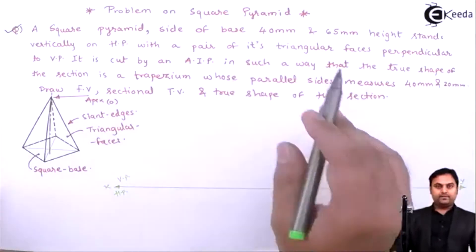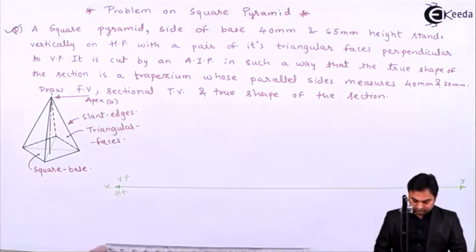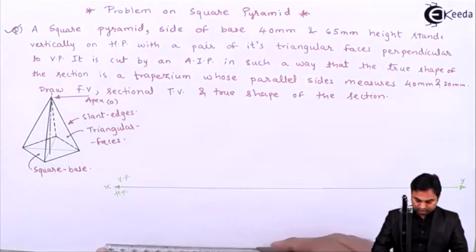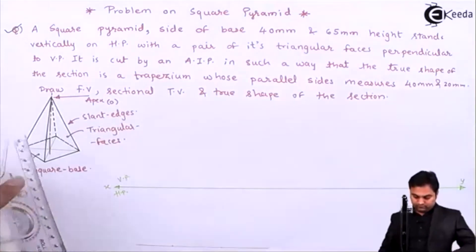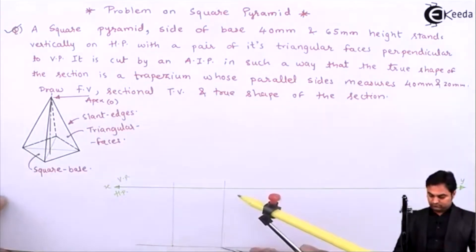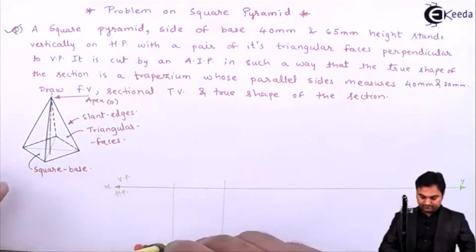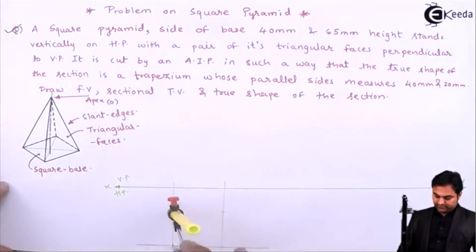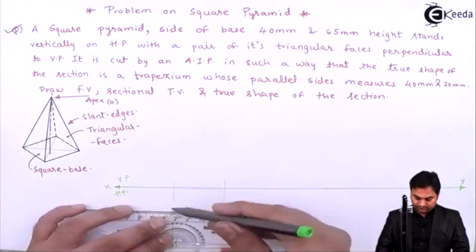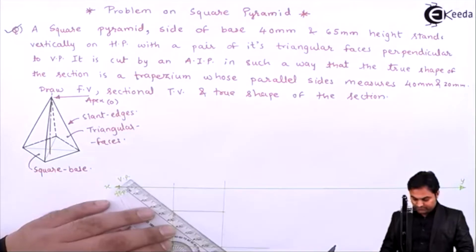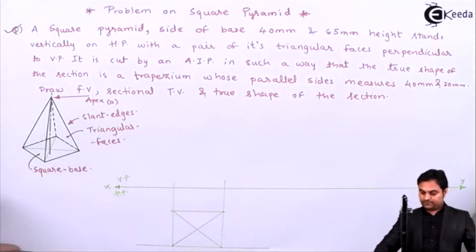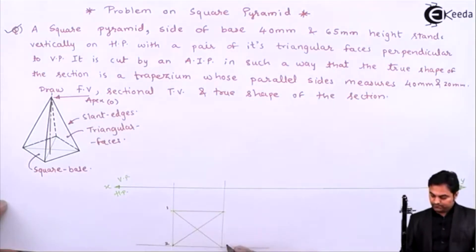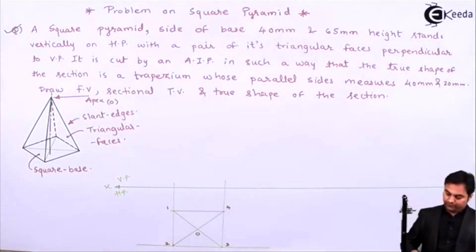The side of the square pyramid is 40 mm. Drawing a light horizontal line and marking 40 mm, measuring it on one side and similarly on the other side, then joining the opposite corners. The notations are 0, 1, 2, 3, and 4, with the apex marked. This is the top view, from which we project the front view.